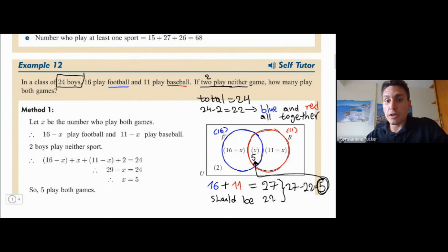So we know the entire blue circle is 16. So if we do 16 minus five, that gives us 11. And on the right, the red circle, we know that the whole circle would be 11. So if we take away this five, which is in the middle, we get six.